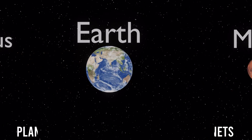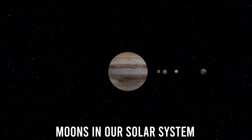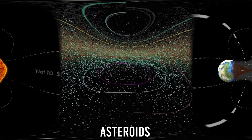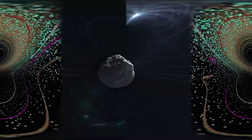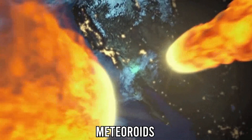Planets, dwarf planets, moons in our solar system, and then learn about eclipses, asteroids, comets, and meteors — and a lot more. Here is an example.